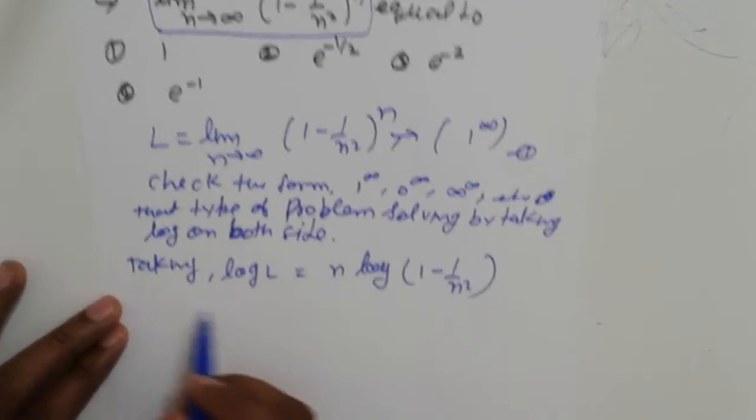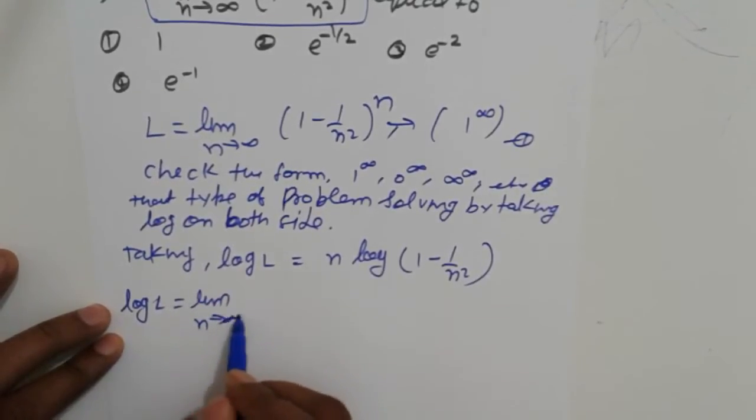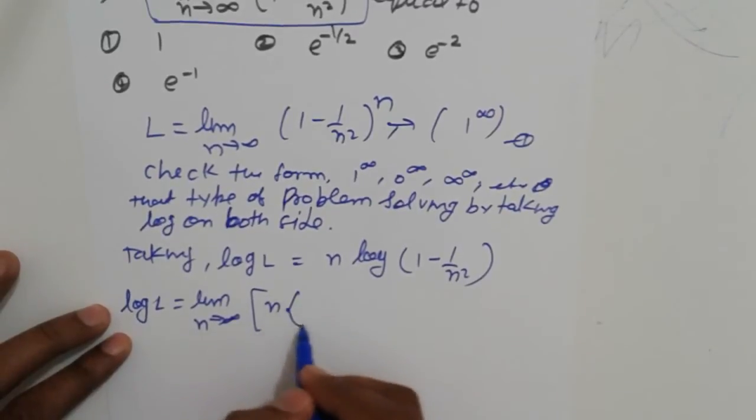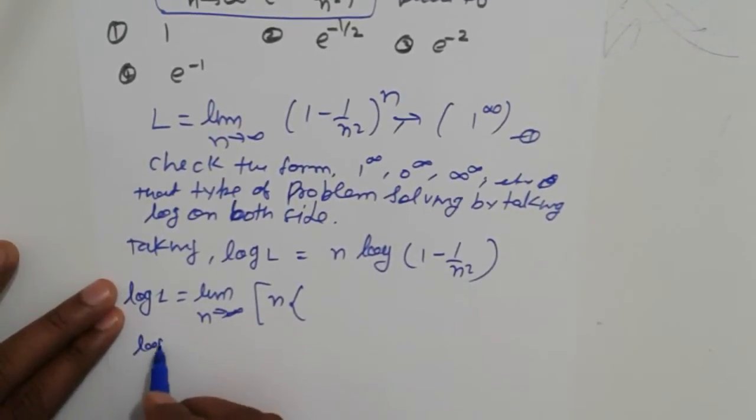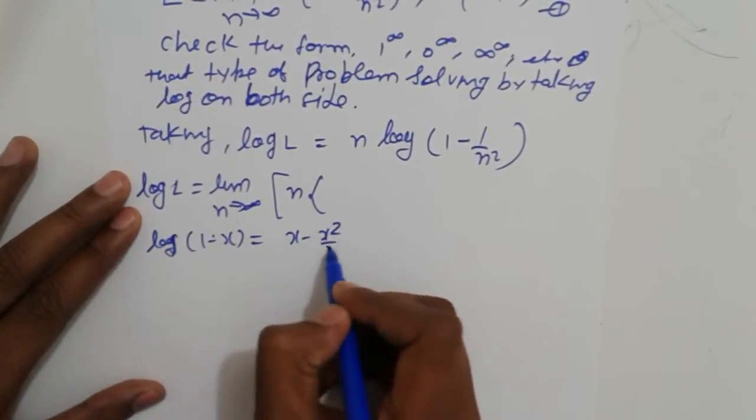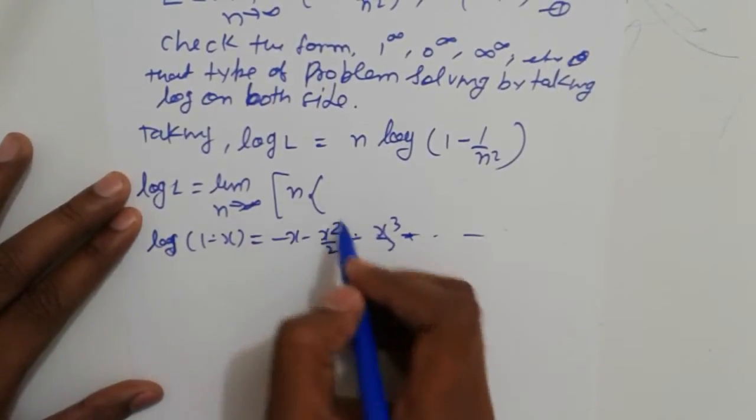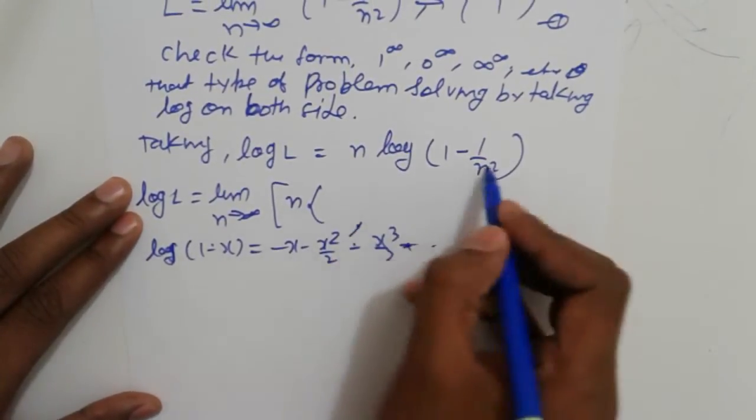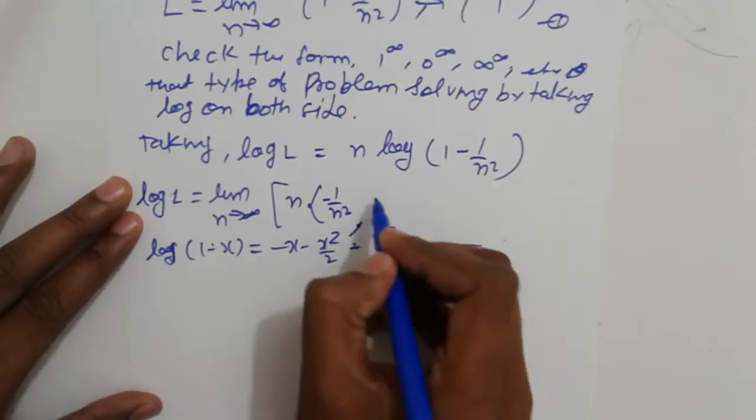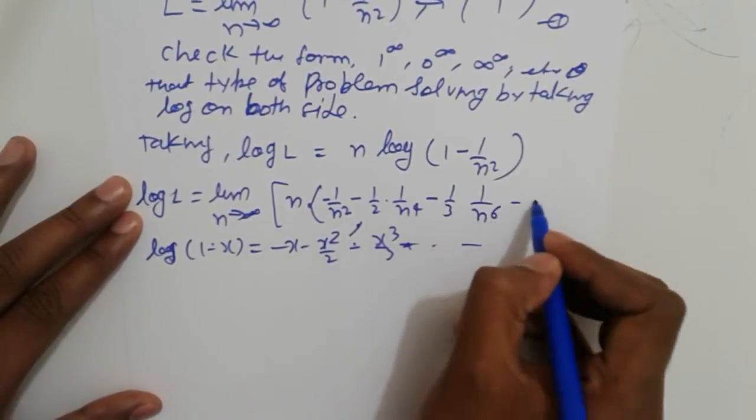This simplifies to log L equals limit n tending to infinity. Now expand using log(1 - x) formula, which is -x - x²/2 - x³/3 and so on. So this becomes -1/n² - (1/2)(1/n⁴) - (1/3)(1/n⁶) and so on.